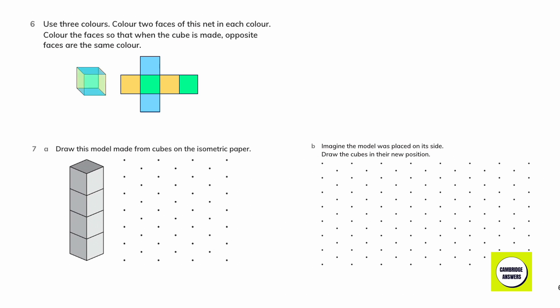Draw this model made from cubes on the isometric paper. Imagine the model was placed on its side. Draw the cubes in their new position.